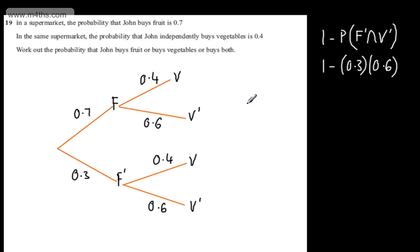Remember, when we're doing and, so it's not fruit and veg, we multiply. So 1 minus now, 0.3 times by 0.6 is going to give me 0.18.